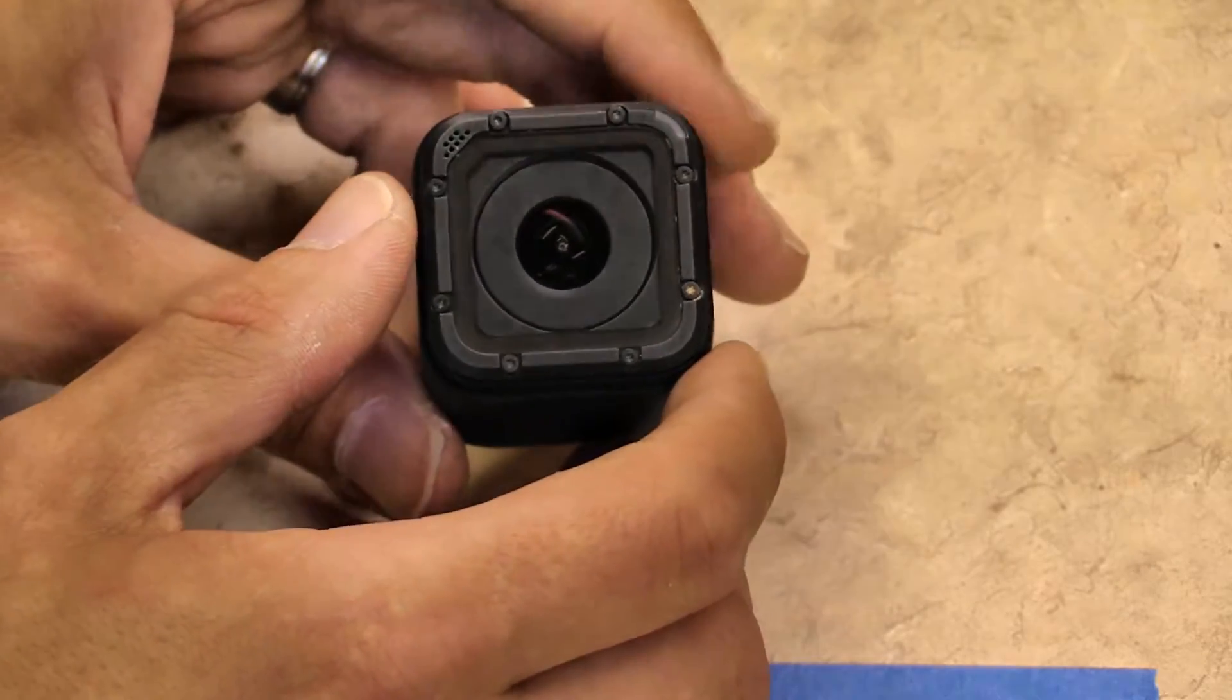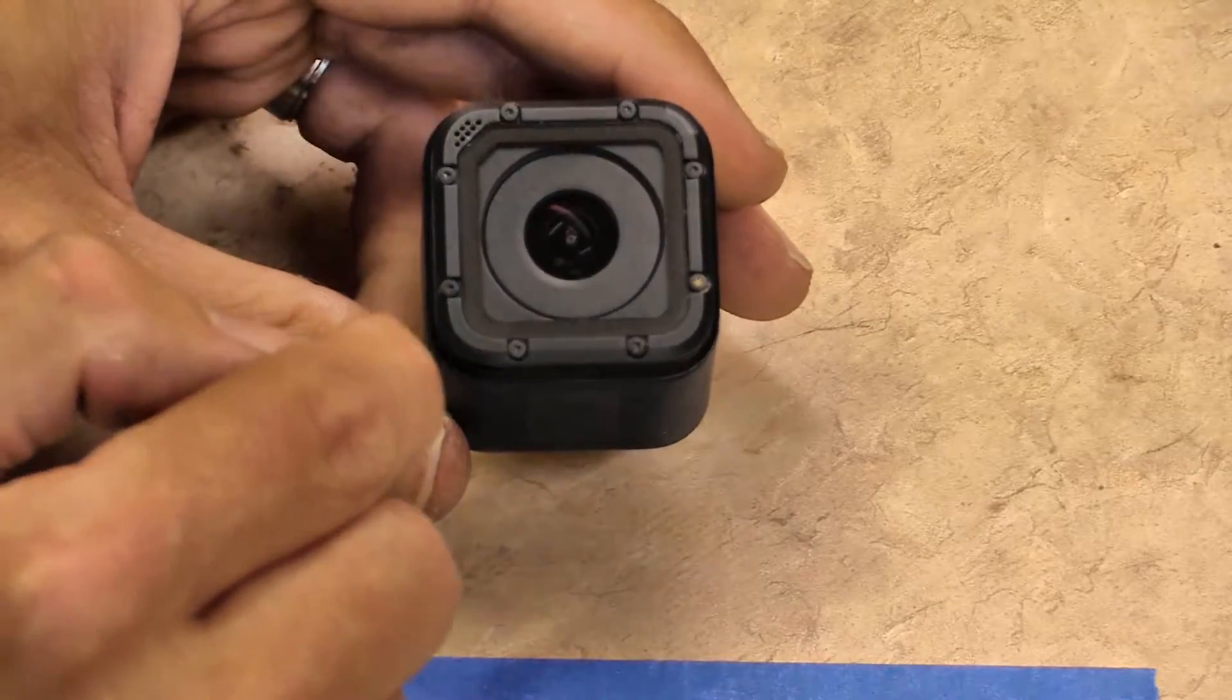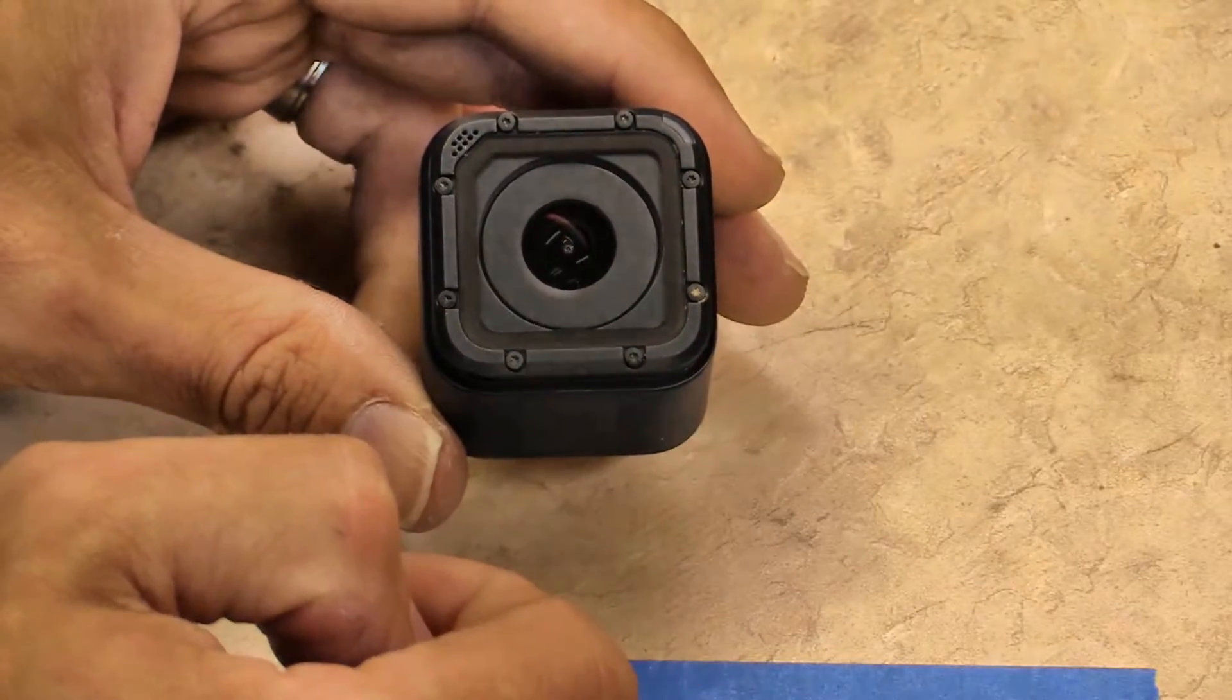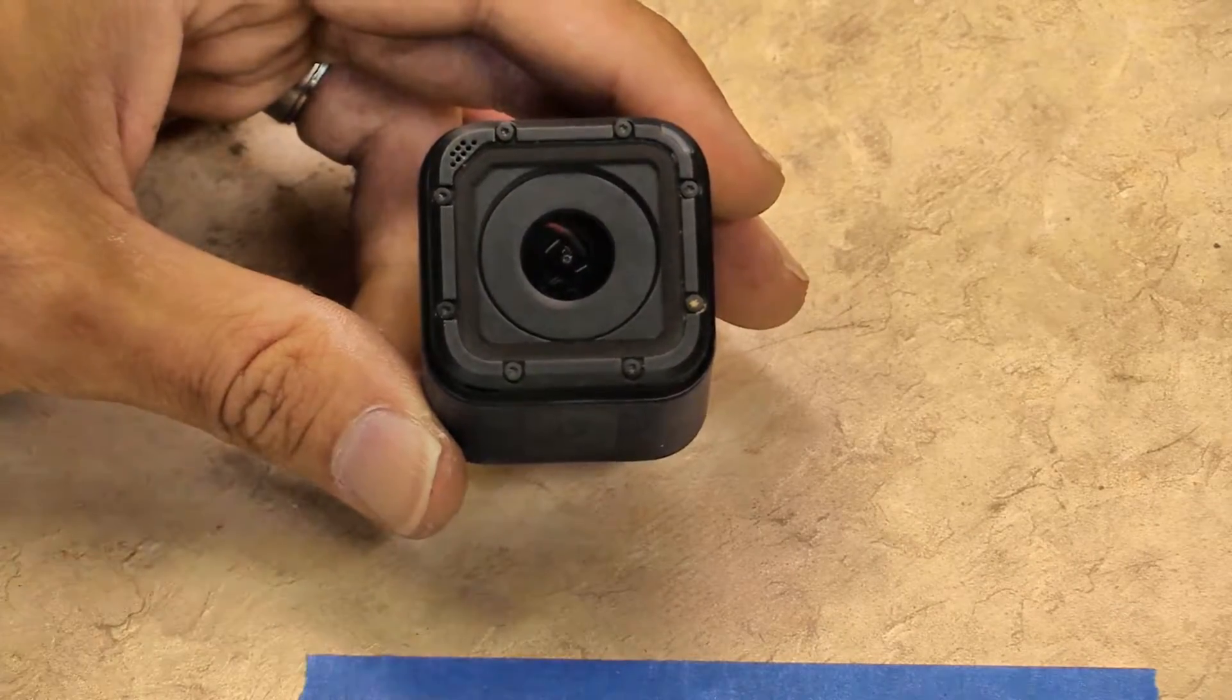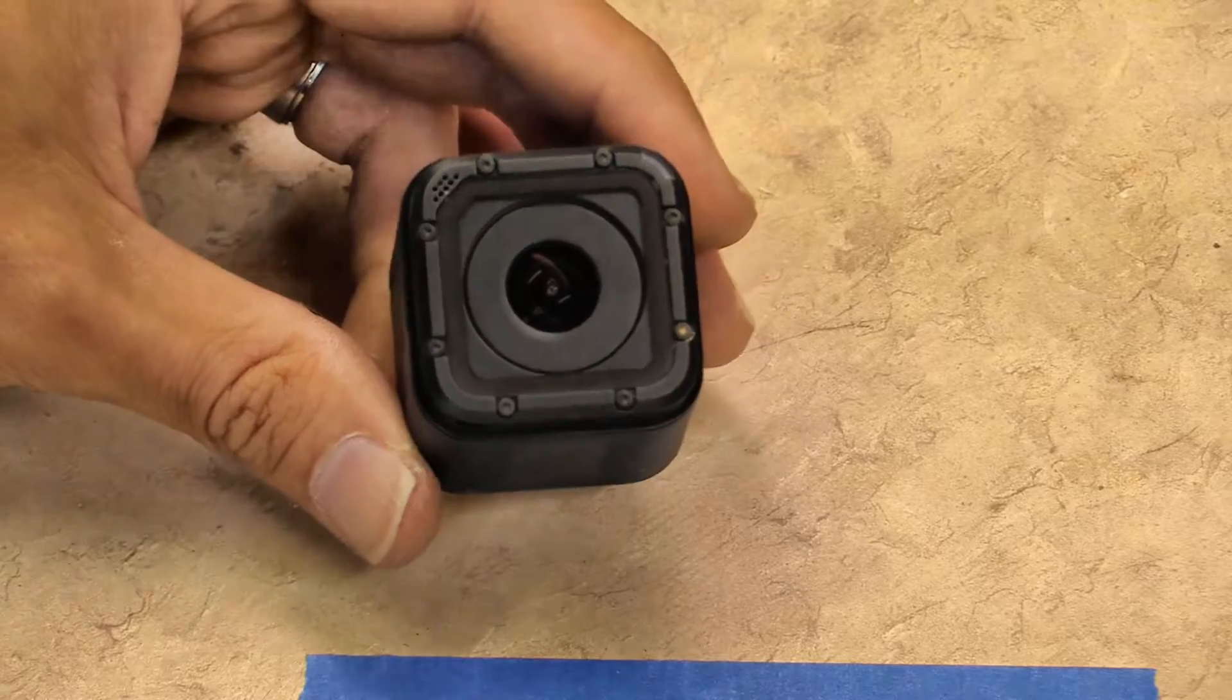So I think the way into the camera, we've got eight T4 Torx screws around the perimeter of the lens here. So let's go ahead and pull those off.